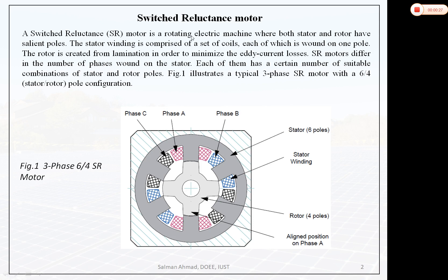A Switched Reluctance motor is a rotating electric machine where both stator and rotor have salient poles. You can see in the figure that both stator and rotor have salient poles. There are 6 poles on the stator and 4 poles on the rotor, so this motor is represented as a 6/4 Switched Reluctance motor — the first number is for stator poles, the second for rotor poles. The rotor is created from laminations to reduce eddy current losses. The SRM differs in the number of phases wound on the stator, each having a certain number of suitable combinations of stator and rotor poles.